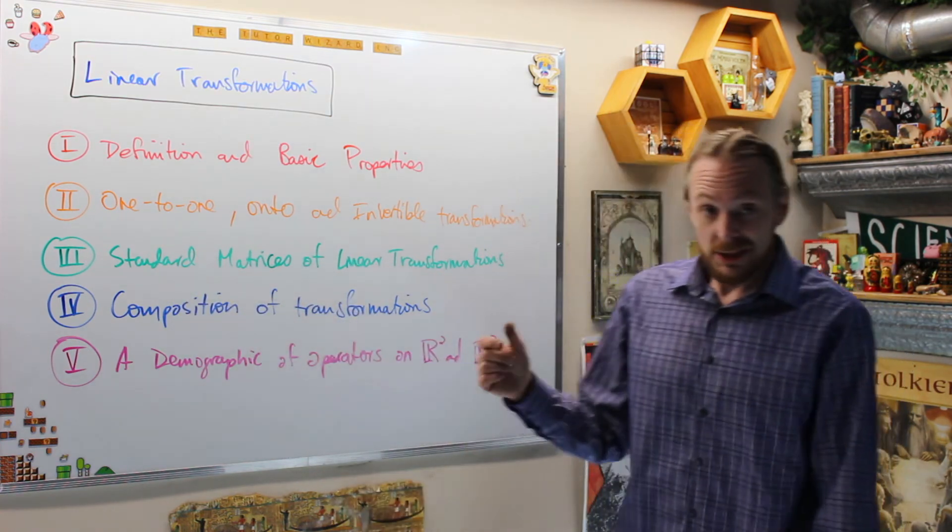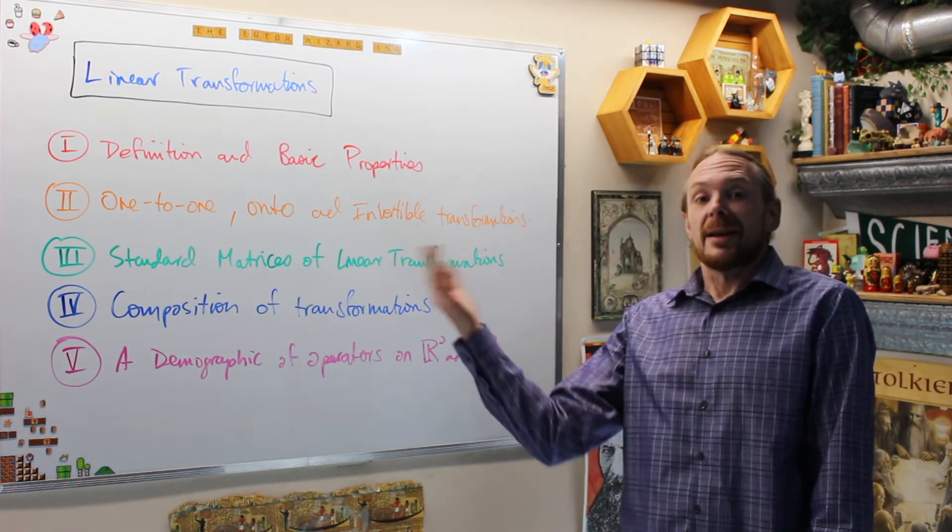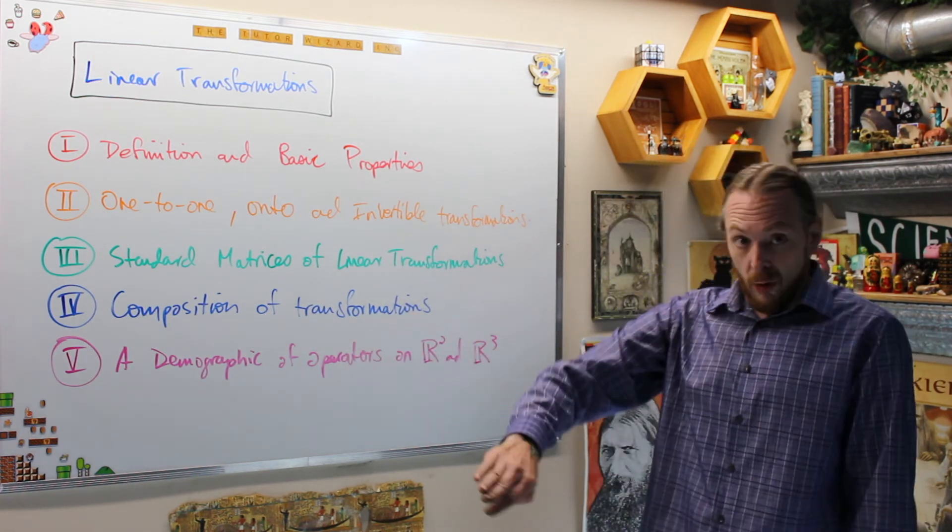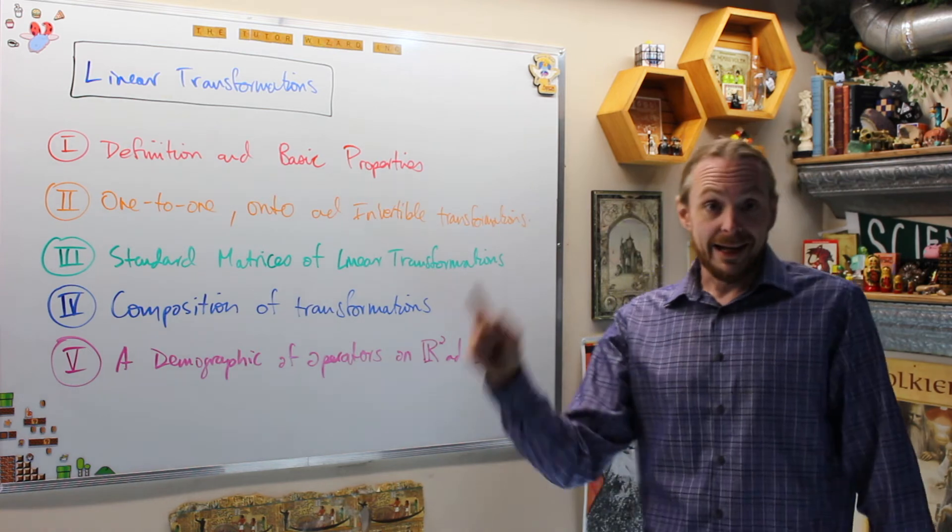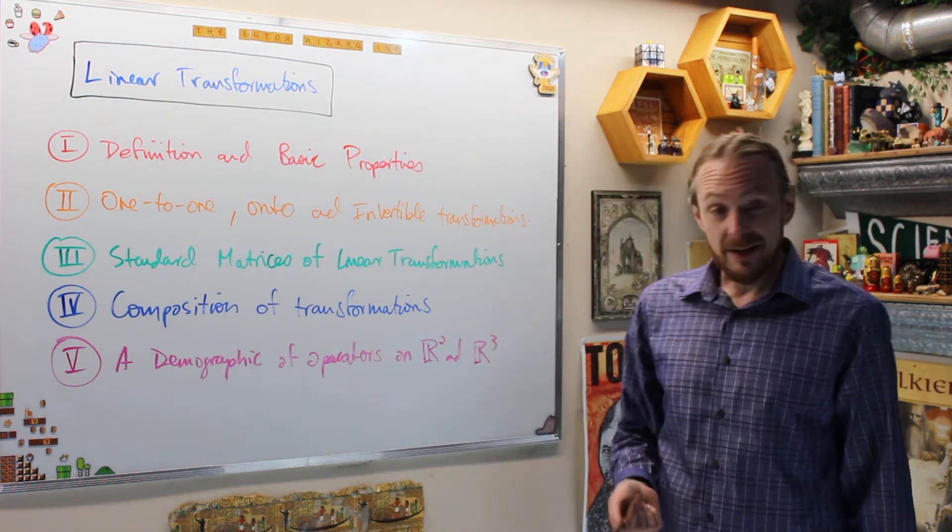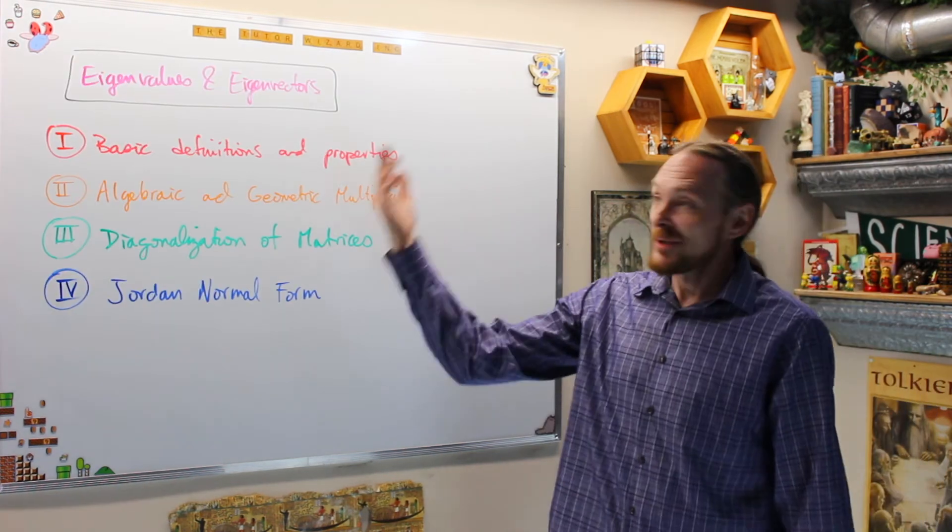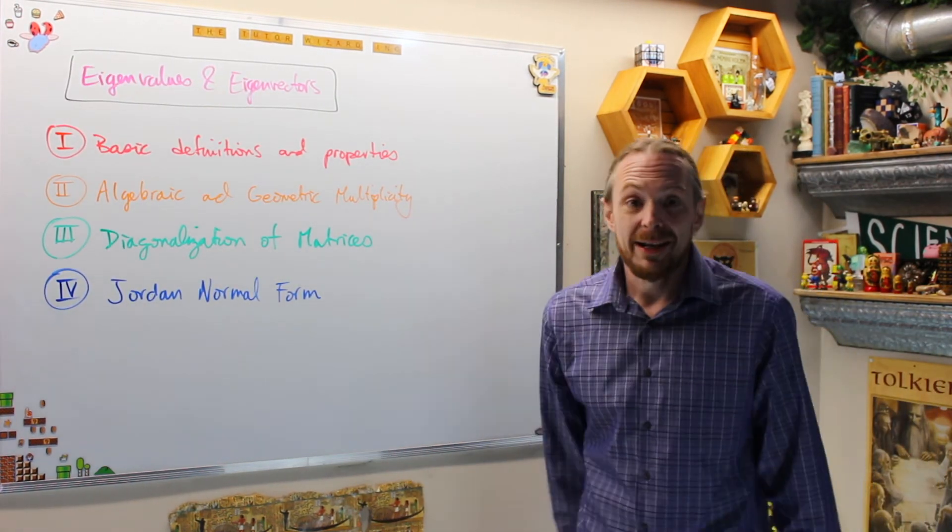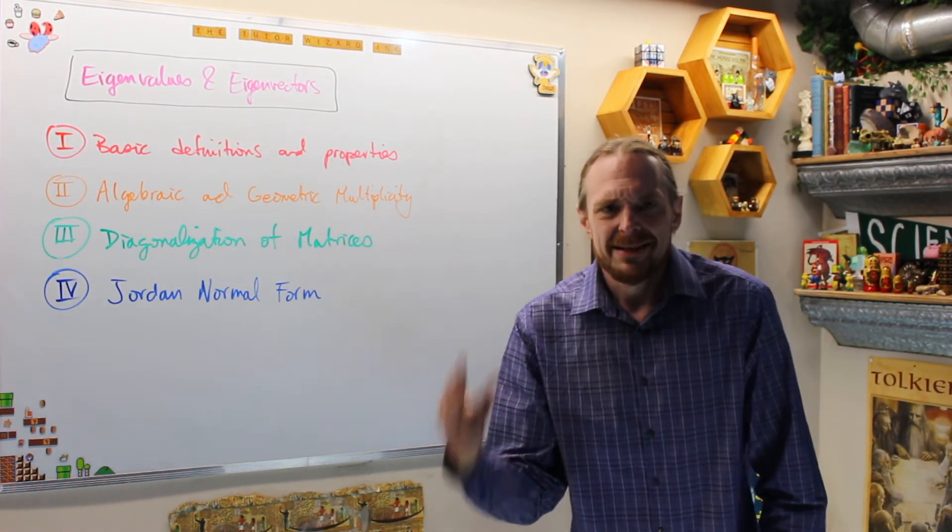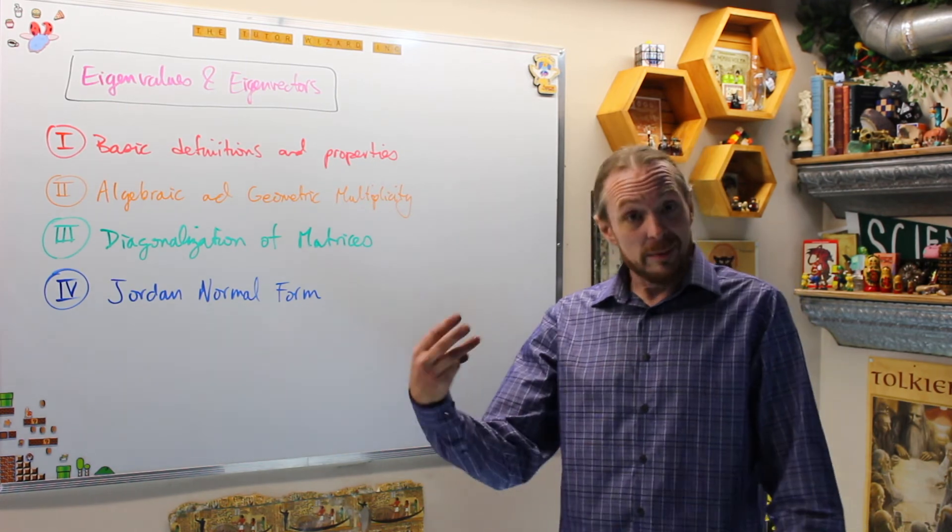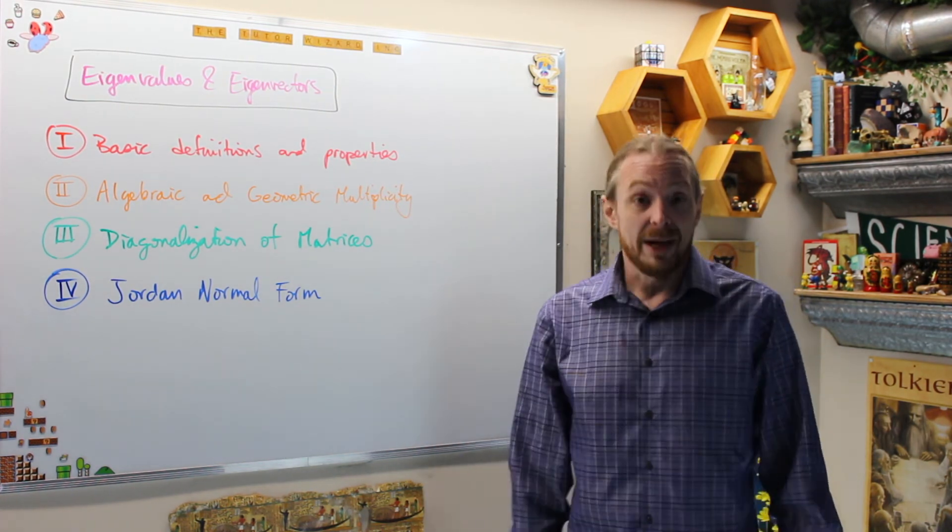Then what we're going to do is composition of transformations. And then one of my favorite yaw, pitch, and roll, and how we do autopilot in an airplane and stuff like that. We're going to give a demographic of linear operators on two-space and three-space. Chapter five is going to be one of my favorite topics, and basically the three ingredients I needed to get my PhD, which happens to be mathematical modeling primarily of the spread of infectious diseases.